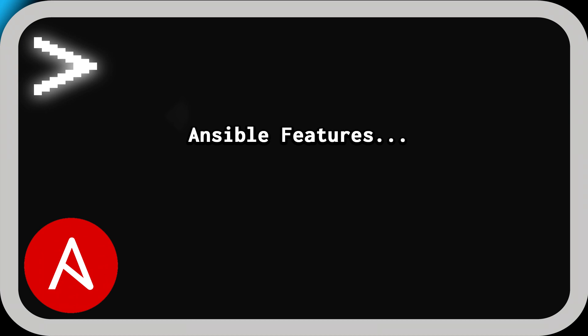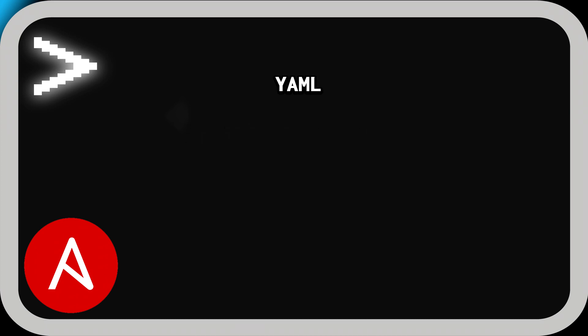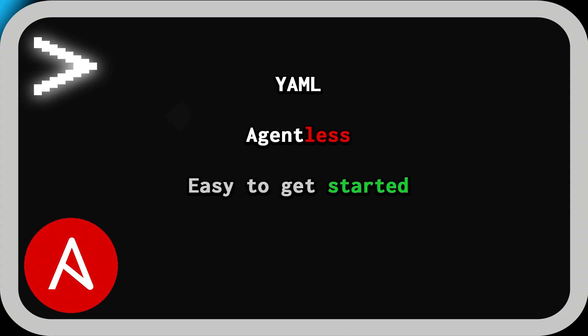Before we begin, I want to highlight what I think are some incredible features of Ansible. Number one: your Ansible playbooks will be written and driven using YAML, and I will take YAML over JSON or Ruby any day of the week. Number two: it is agentless, meaning your managed nodes do not need to have an agent running in order to receive an update. Number three: it is incredibly easy to get started, and I will show some documentation on their website as part of this tutorial. And number four: you can automate just about everything using this tool, and I hope to demonstrate that today.